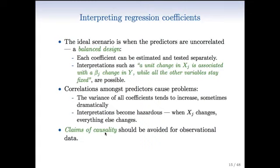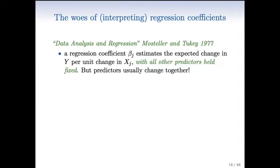So in both those cases, we can't really talk about the change of one predictor where the other one's fixed, because the predictors will tend to move together in real data. And what this means is claims of causality should be avoided.